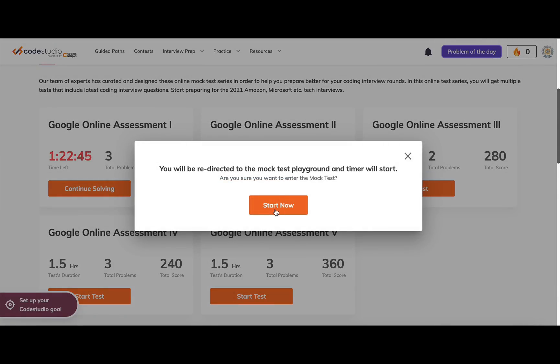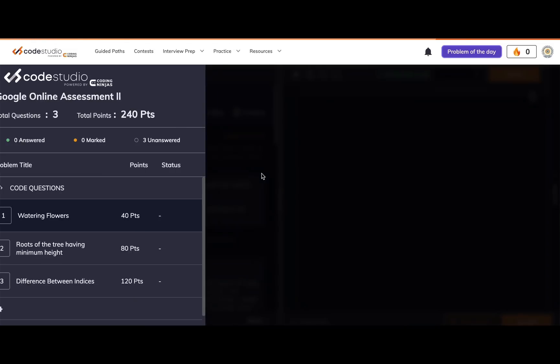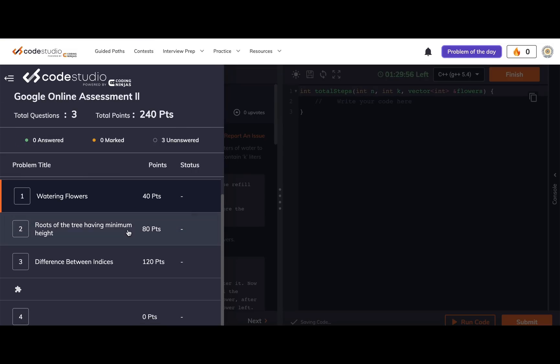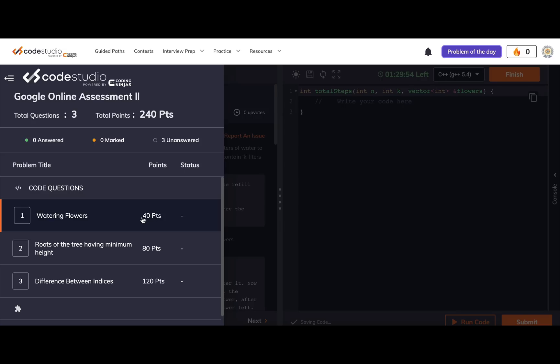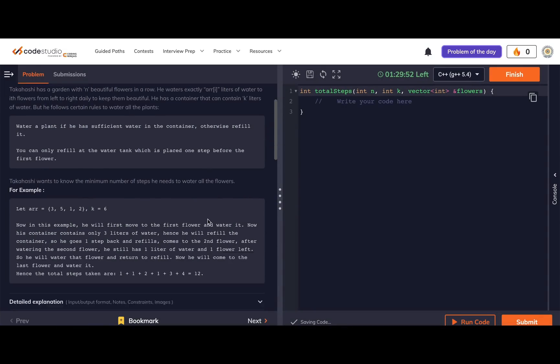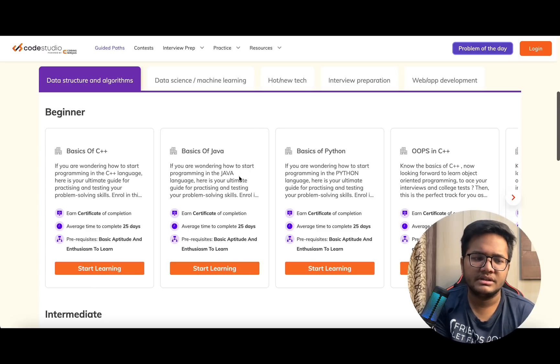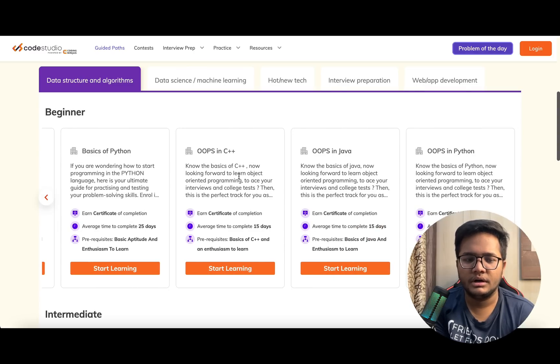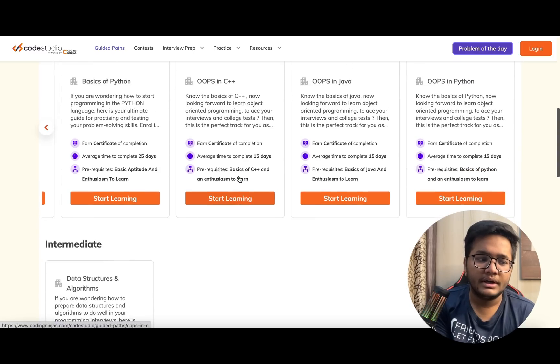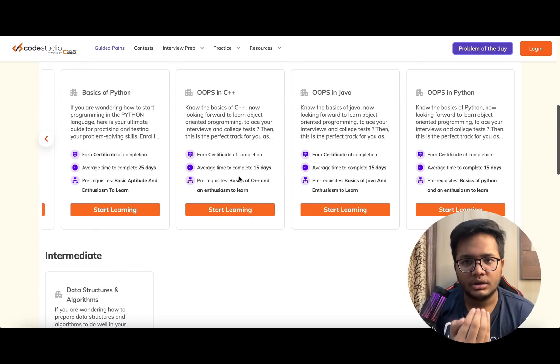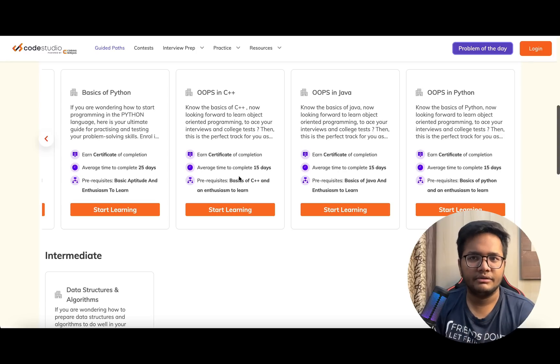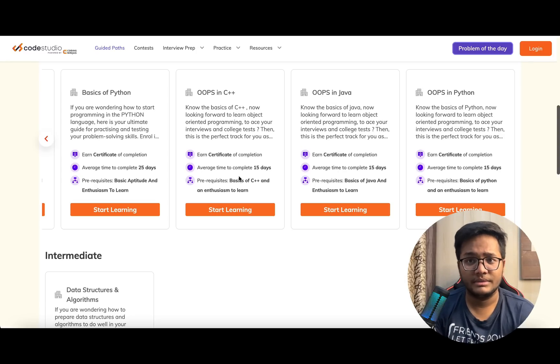You can click on start test to begin. You'll see this kind of interface with three questions with different points, and you can solve these problems. On Code Studio you'll also find a data structures and algorithms guided path where you can start from C++, Java, whichever language you want, and understand what things to start with and how to proceed further.